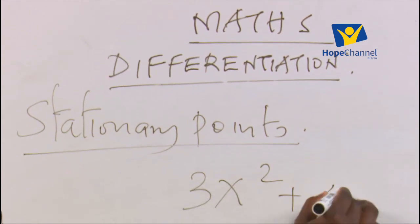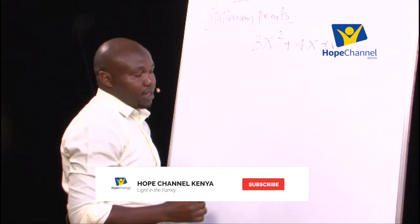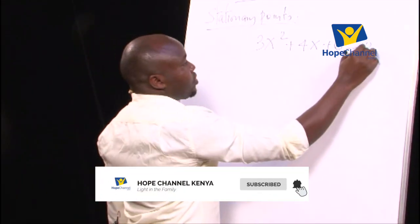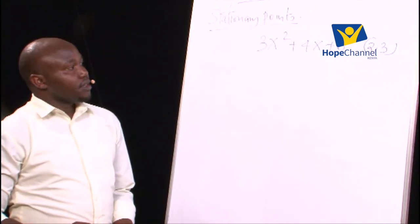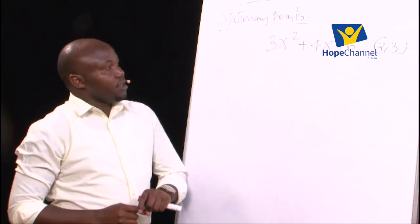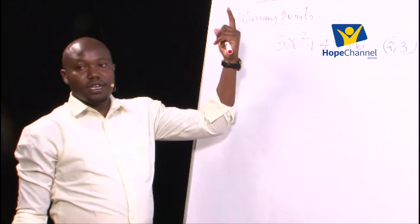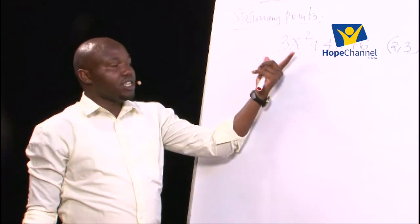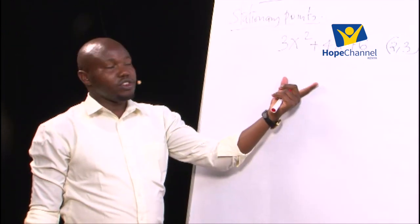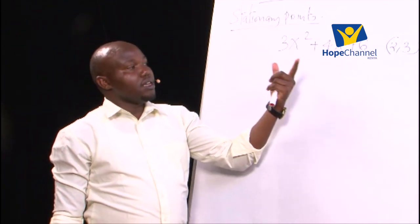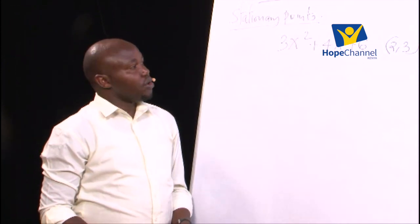The equation from last time was y = x² + 4x + 6, passing through the point (0, 2, 3). So once I do this question, I'll have covered how to differentiate an equation, how to obtain the gradient of a given equation, and how to get the equations of tangents and normals. Go with me.